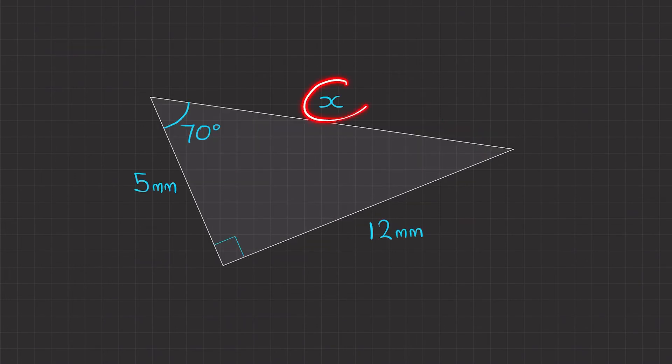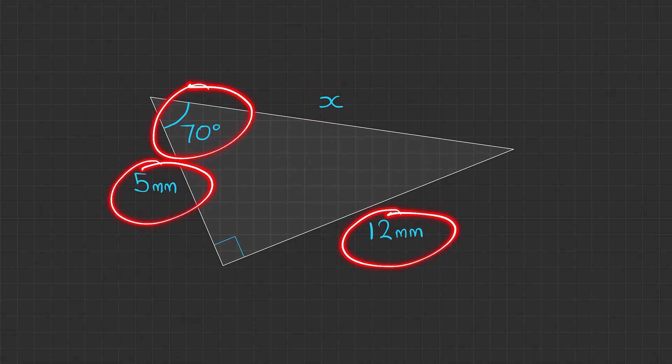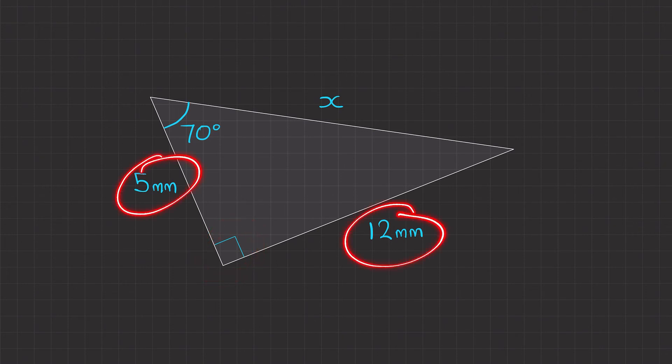Now this one, we want to find this side X here. We've been given this side, this side and this angle. Now you could look at whether we can get two pairs. However, be very wary with this because this is a right angle and because it's a right angle and we've got two sides and we're trying to find the third side, we can just use Pythagoras' theorem.